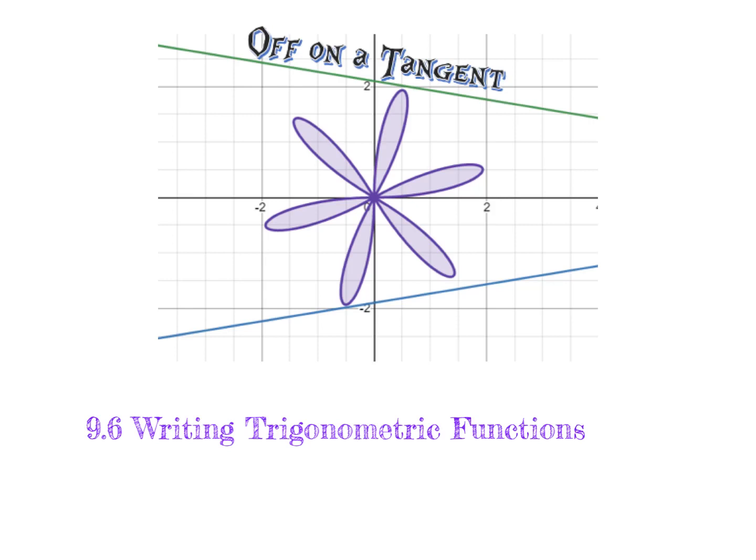Hello and welcome. In this video, we're going to write trigonometric functions. We're going to focus on how to look at the graph of a trig function — a sine or a cosine function — identify whether it is easiest to write that function in terms of sine or cosine, determine what the amplitude is, what the center is, and how to use all that information to write the function from the graph. So let's jump right in.